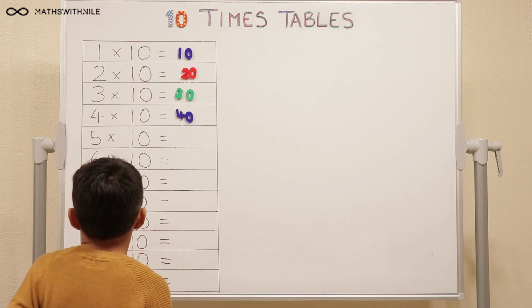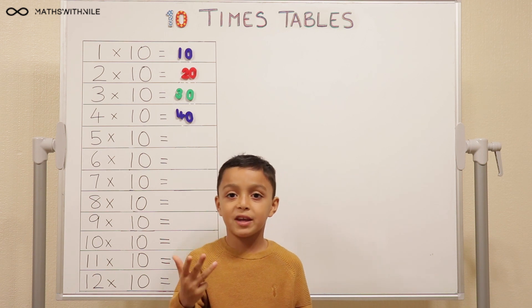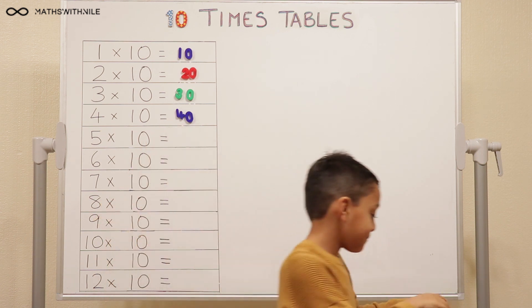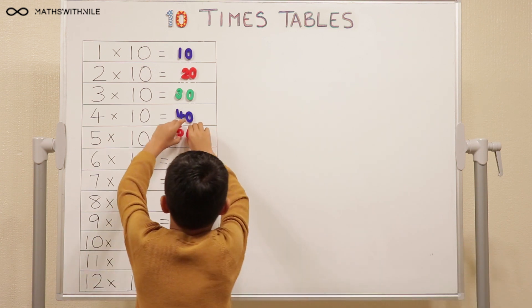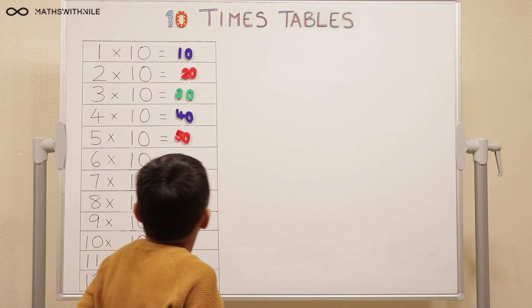5 times 10, so 10, 20, 30, 40, 50. So I'll get my 50, place it on the board. 5 times 10 equals 50. Yeah.